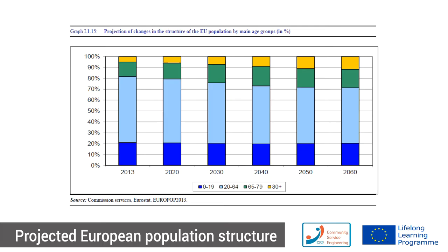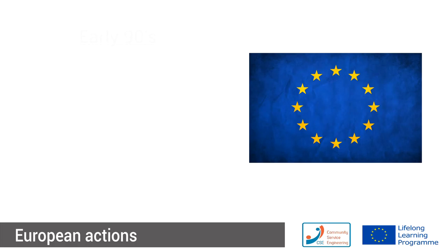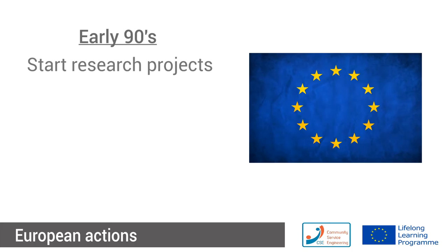This is a classical picture produced every couple of years by the European Commission. It shows the split in population groups expected over the next decades. If we see 2013 as today, the most striking point is that about 5% of the top level are people over 80, but in 2050 to 2060 this will be more than 10%.